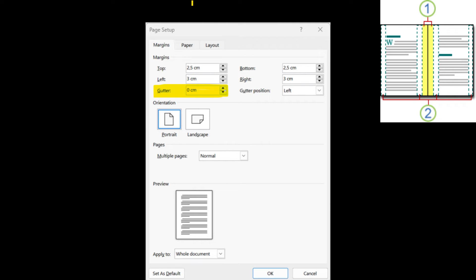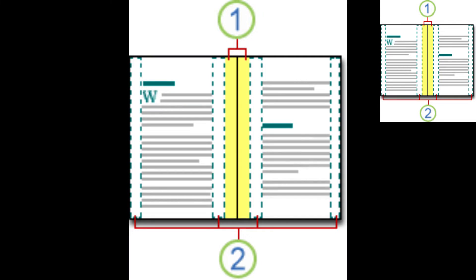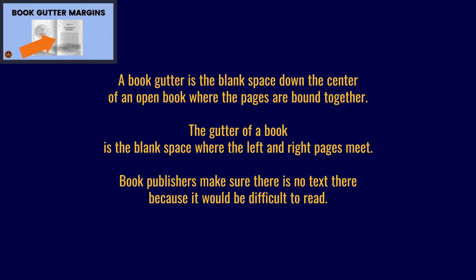Are we ready to export the document? In Microsoft Word, you have the option to update the gutter. Unfortunately, in Google Docs, we don't have this option. I will show you on the screen what the gutter is. The gutter is the middle of the book — in this picture, you see the gutter is the yellow part. A book gutter is a blank space down the center of an open book where the pages are bound together, where the left and right pages meet. Book publishers make sure there's no text there because it would be difficult to read.